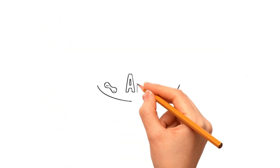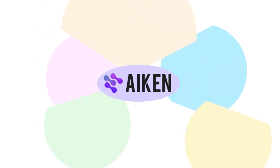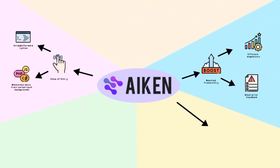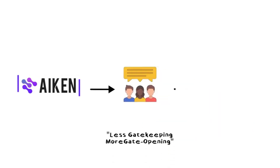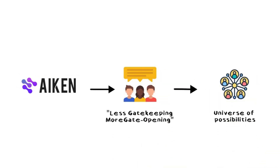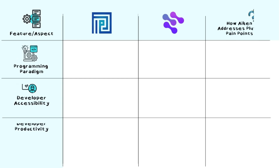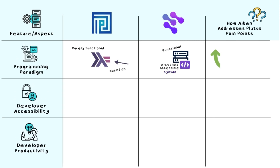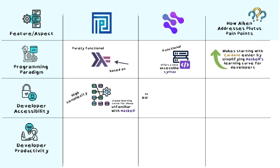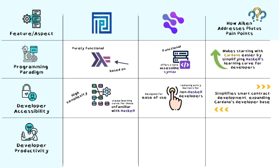In short, Aiken is the upgrade that Cardano's development landscape has been waiting for — less gatekeeping, more gate opening to a universe of possibilities. To truly understand how Aiken streamlines development, let's take a look at this comparison table. Aiken offers an accessible syntax that eases the steep learning curve associated with Haskell.